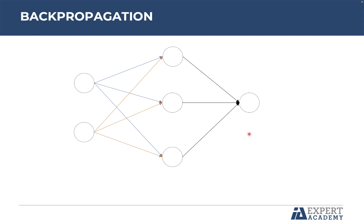Hello and welcome to this lecture where we will continue understanding multilayer neural networks, with the focus on how to adjust the weights using backpropagation. Let's quickly review the whole process. We started by initializing a random set of weights, then we calculated the outputs for each instance, which is the final output of the neural network, and then we calculated the error.